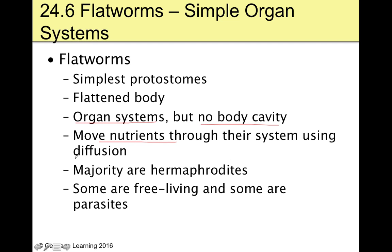When it comes to moving nutrition, it's pretty much going to be diffusion — not to say there's not a network of almost like vessels that will carry it around the flatworm, but when it comes to getting into all the cells, it's going to be simple diffusion. Which means flatworms are going to have to stay pretty small. The vast majority of flatworms are going to be hermaphrodites — they contain both genders. Some are free-living, which we'll talk about first, and then a few are parasites.